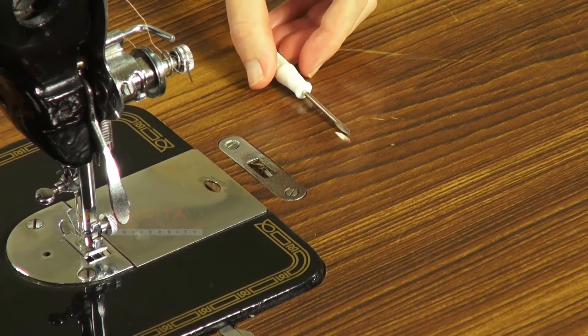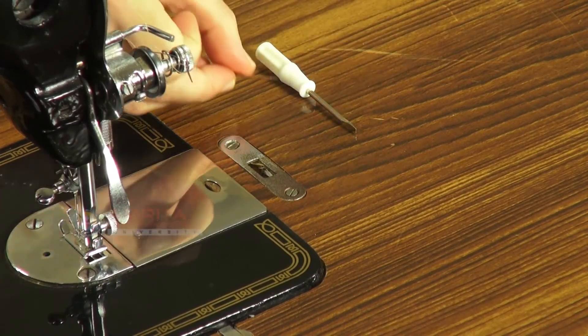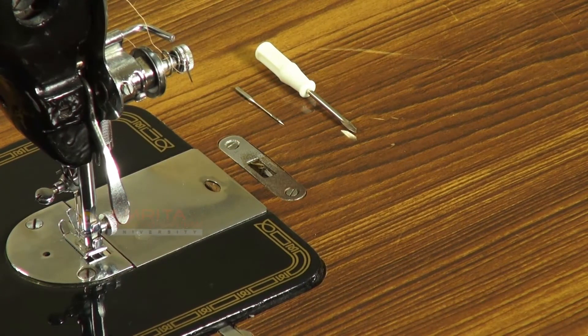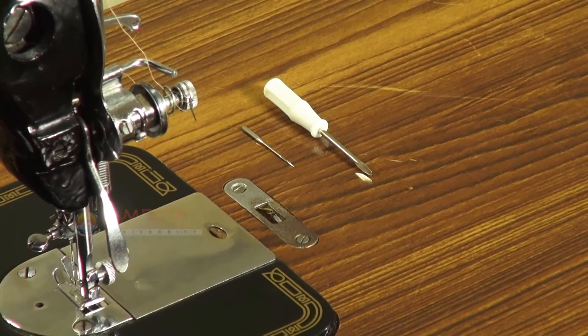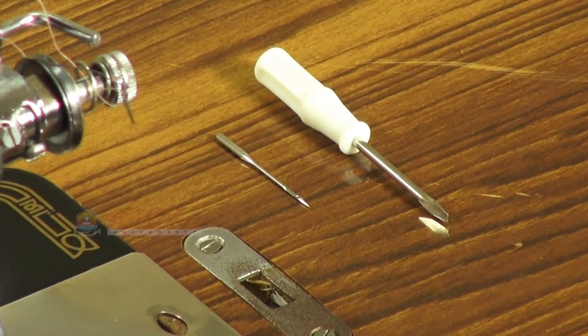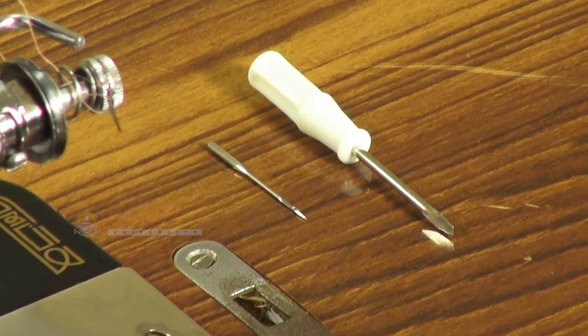Let us first familiarize with the tools that you would need to install a needle in a sewing machine. The tools that you would need are a new needle and a screwdriver that fits in a needle clamp screw. Keep the tools within reach.